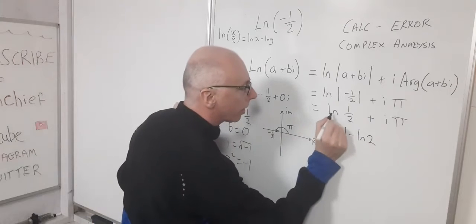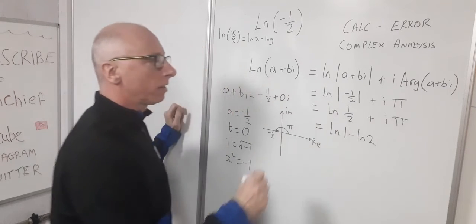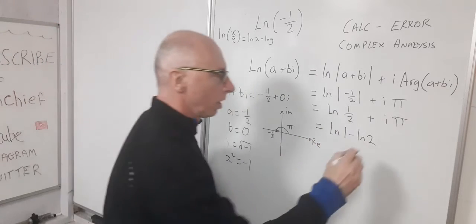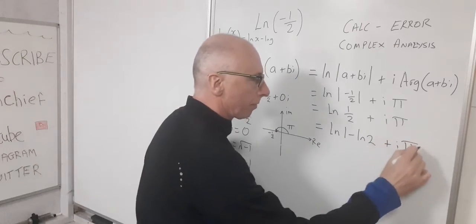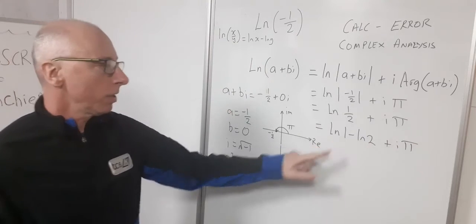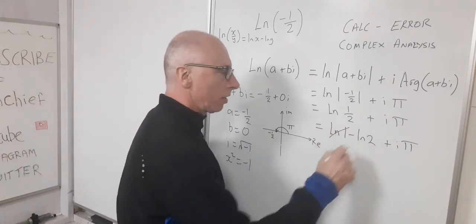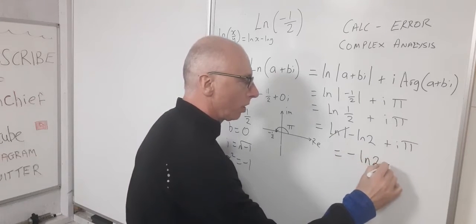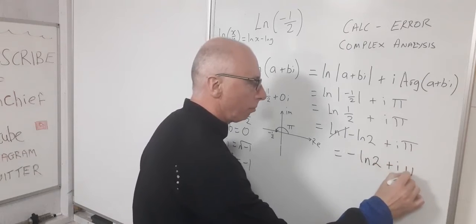So the natural log of one minus the natural log of two plus i-pi. The natural log of one, we know this is zero. So now we're left with minus natural log of two plus i-pi. That is our principal result.